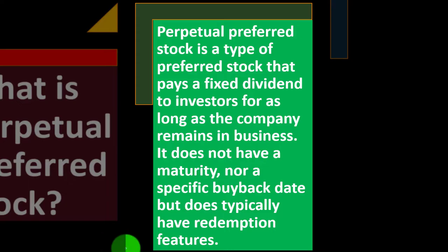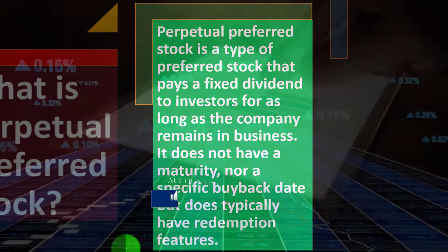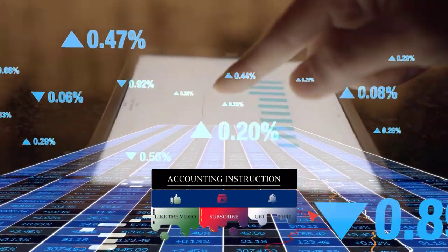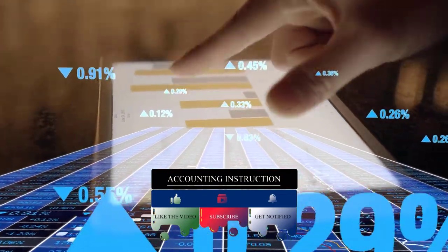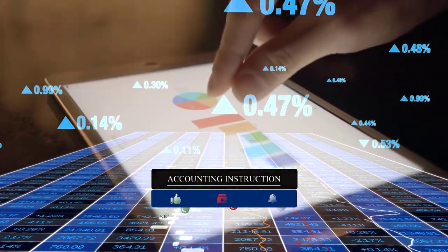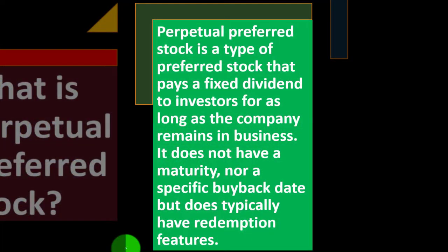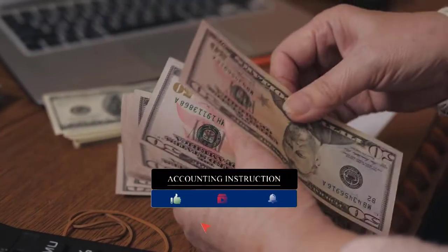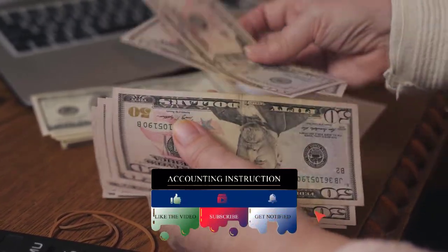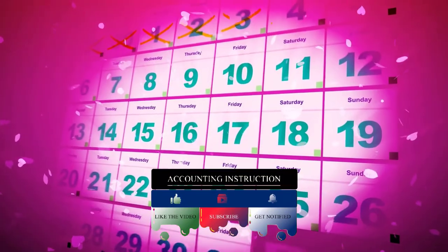Preferred stock is a little similar to bonds because it's more of a fixed kind of payment. However, with bonds it's definitely fixed — if they don't pay the interest it's a default on the bond contract, which would be very bad. There's a little more flexibility on the preferred stock side. Also, preferred stock pays dividends for the life of the business, which is different from bonds because bonds have a maturity date.